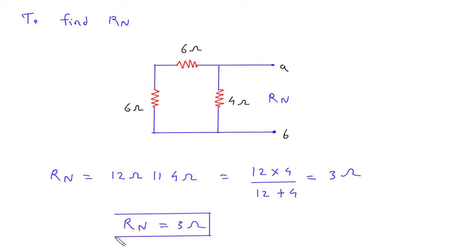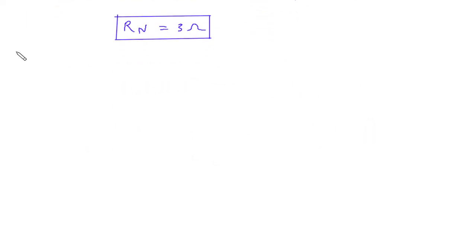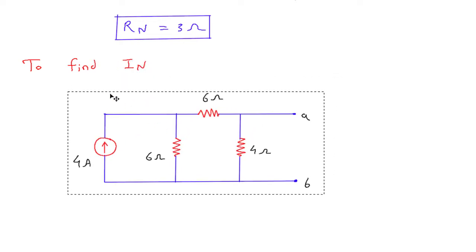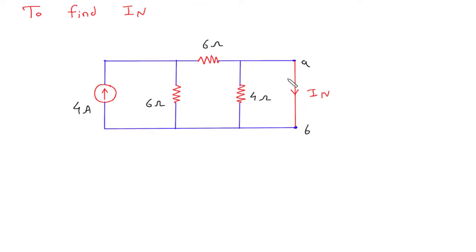Next we have to find In. To find In, Norton's current, we will short circuit the terminal AB, and this will be current In. Now this 4 ohm is short circuited, so this will be ignored.